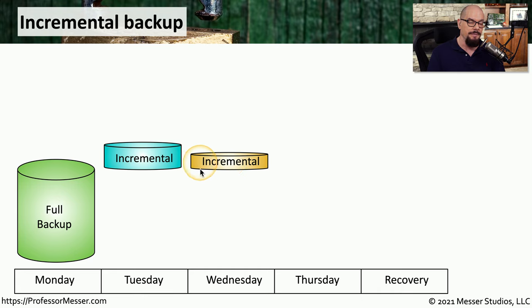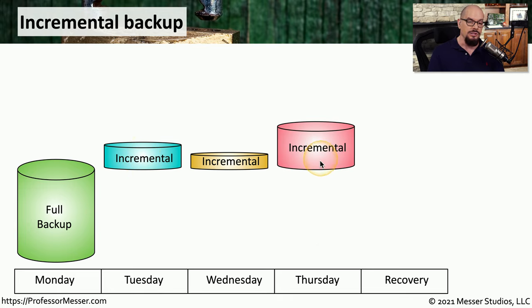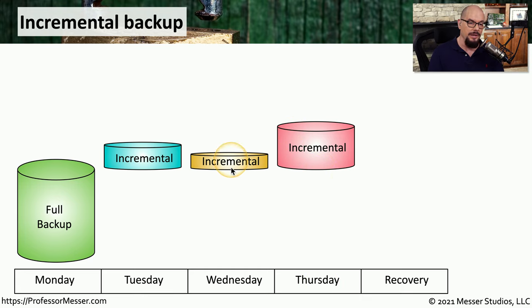In this particular case, the amount of data that has changed between Tuesday and Wednesday is less than the data that changed between Monday and Tuesday. You might also perform an incremental backup on Thursday, and this would be everything that has changed between Wednesday and Thursday.